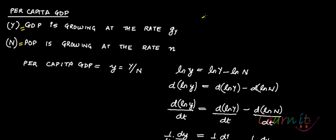So notice that per capita GDP is small y, which is given by Y by N. You need to find out the growth rate in small y. So what you will do is take the logarithm of small y, which is equal to log of Y minus log of N.